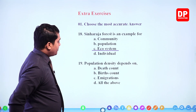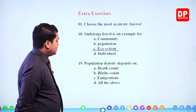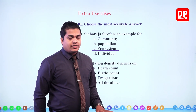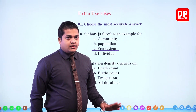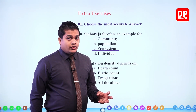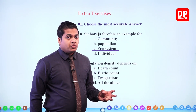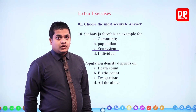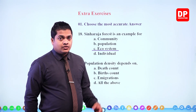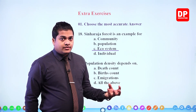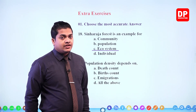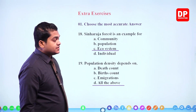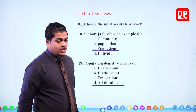Next: population density depends on — death count, births count, immigrations, or all of the above. Population density depends on death count, birth count — both are correct. Immigrations are also correct, as organisms immigrating from a certain population affect population count. So all three are factors that determine population density. The answer is all of the above.